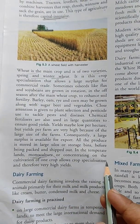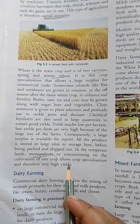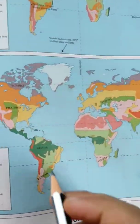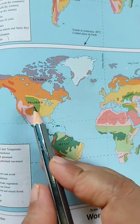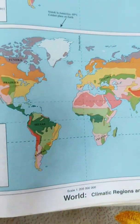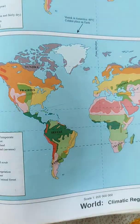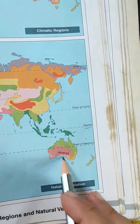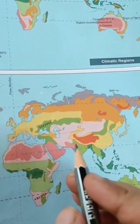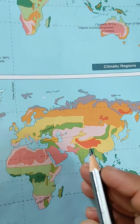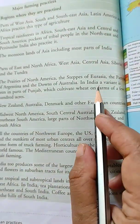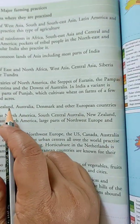Extensive commercial grain farming is done in the prairies of North America, steppes of Eurasia, pampas of Argentina, and the downs of Australia. A variant is seen in parts of Punjab, which cultivates wheat on farms of a few hundred acres.